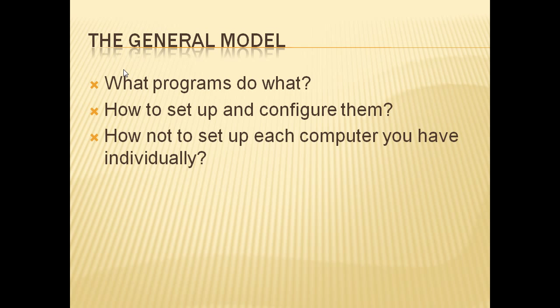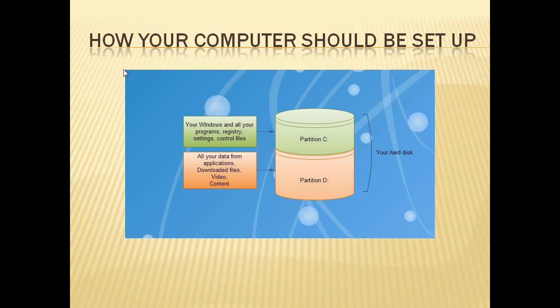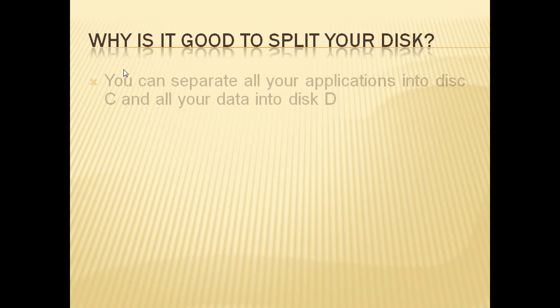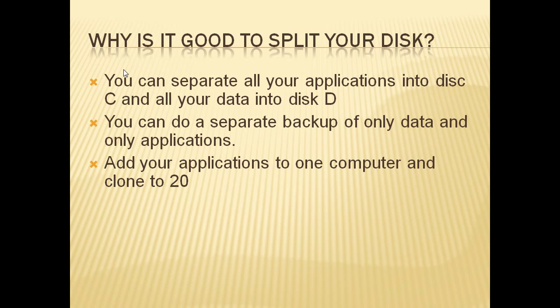I would highly recommend splitting your computer's hard disk into two different partitions — for example, Partition C and D. Number one, you can separate all your applications into disk C and all your data into disk D. Number two, you can do a separate backup of only data and only applications. Number three, anytime you need to add more applications to all of your computers, you can add them to one and then simply copy your image data to all 20 computers again, just as you did initially. It will only copy applications and will not touch the data.